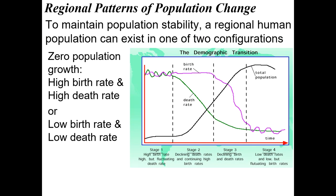This is an important graph to understand. This is called the demographic transition, and it's showing the difference between pre-industrialized societies and industrialized societies. This shows birth rate and death rate — with a high birth rate and a high death rate, you will have a pretty flat total population.